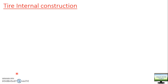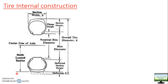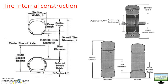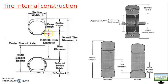This internal construction will be the same for radial tire as well as bias ply tire. For better understanding I have a figure here — if you take a section of this tire it will look like this. In this figure, this is the center line of the axle or tire, and from here the rim starts. This is basically the nominal rim diameter — from this point, this line to this line.